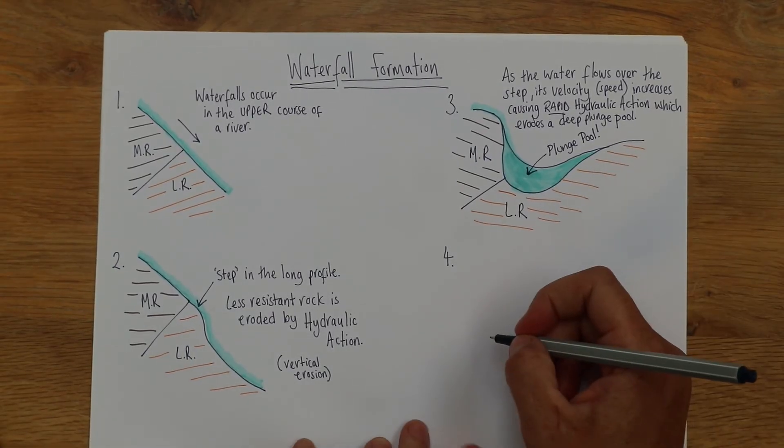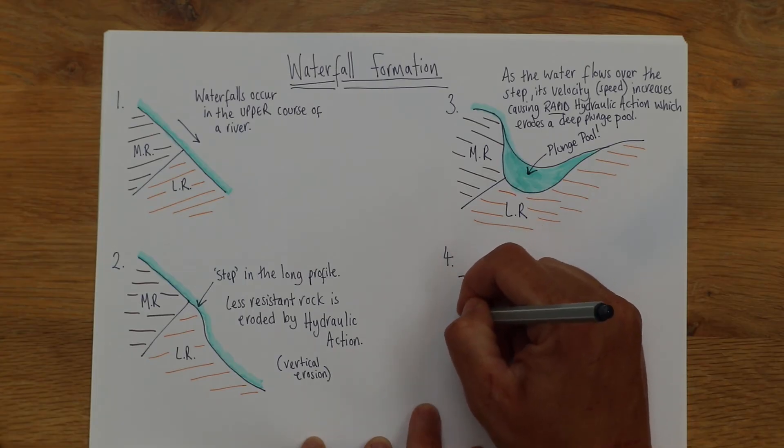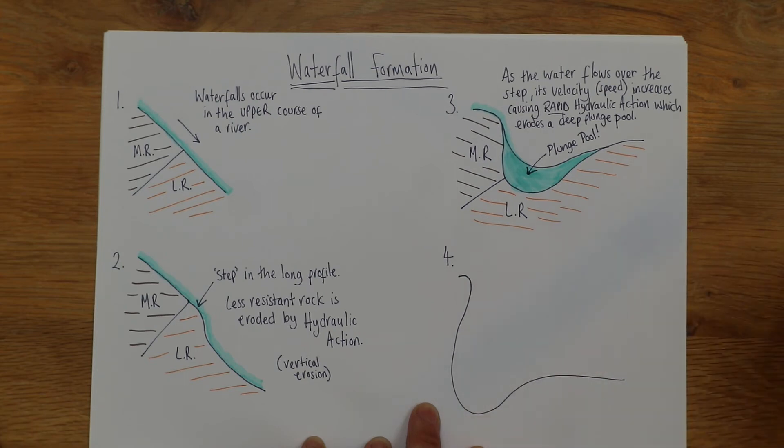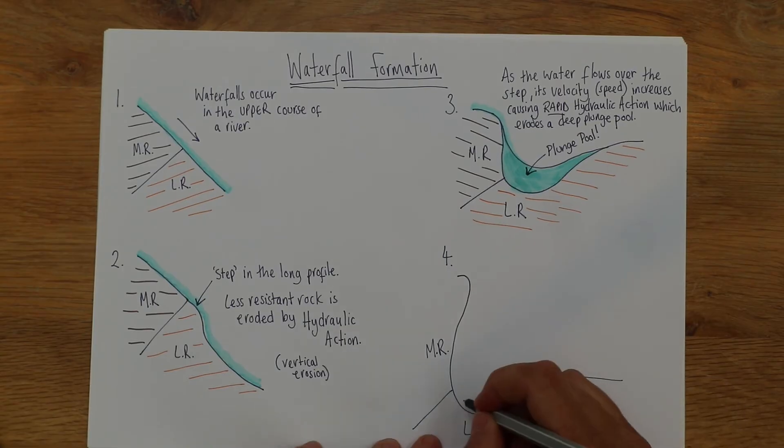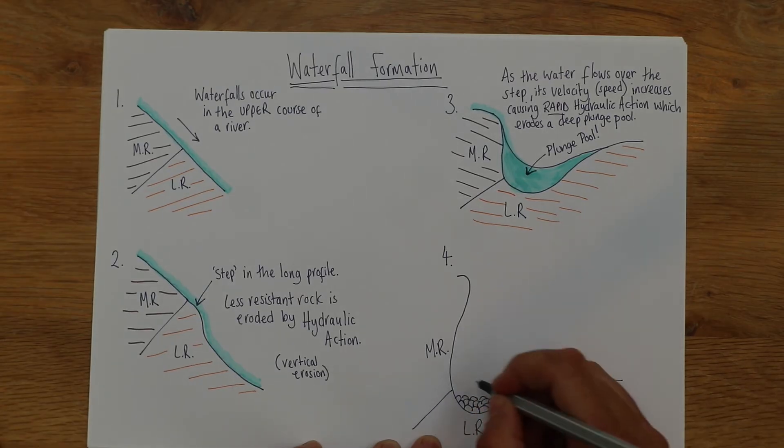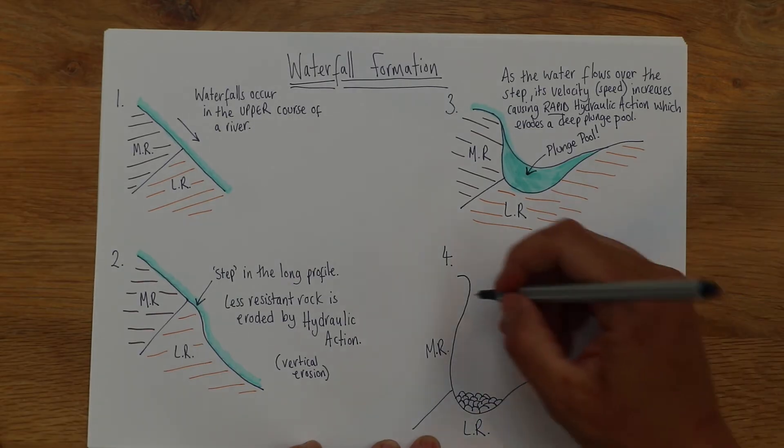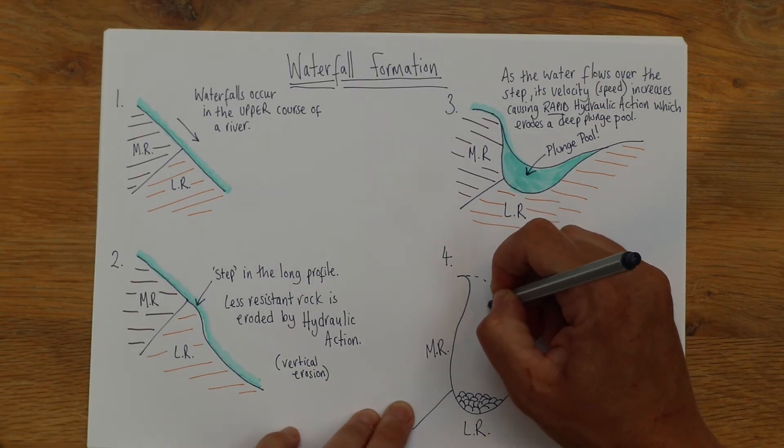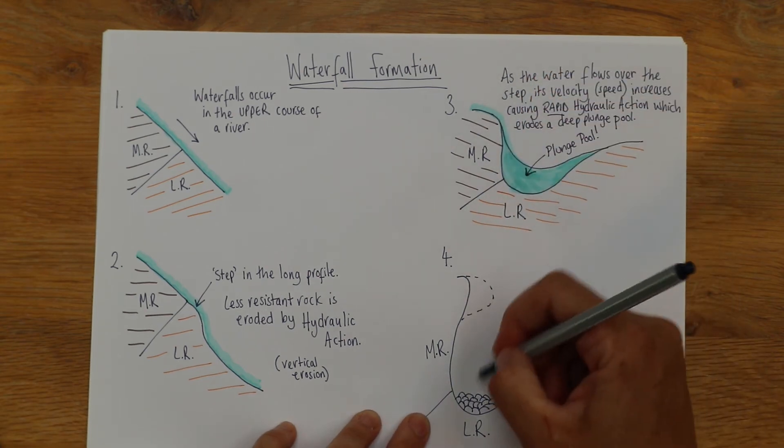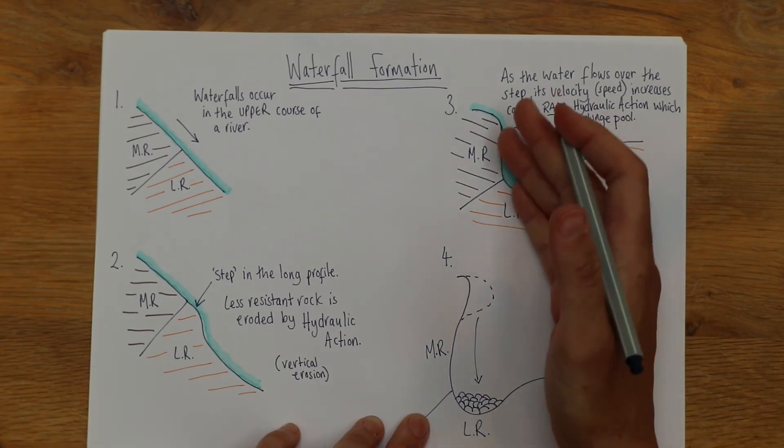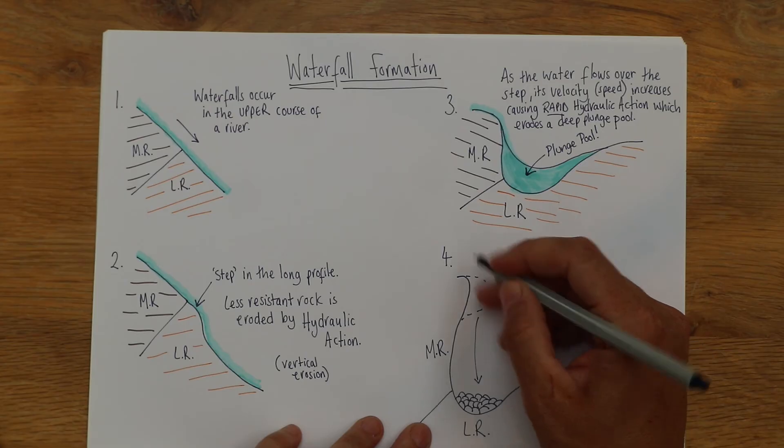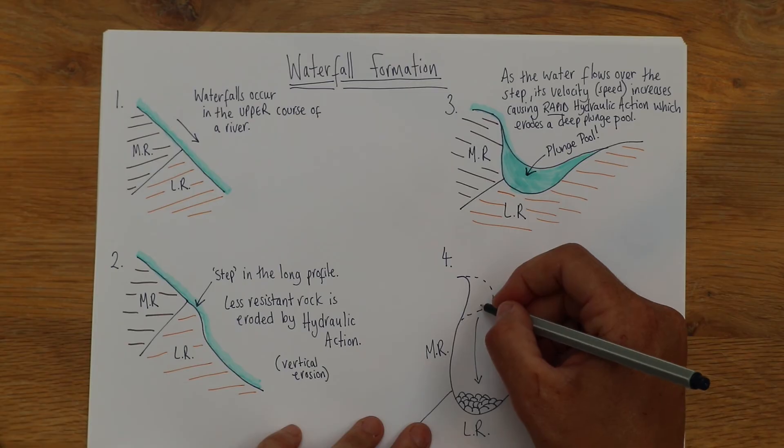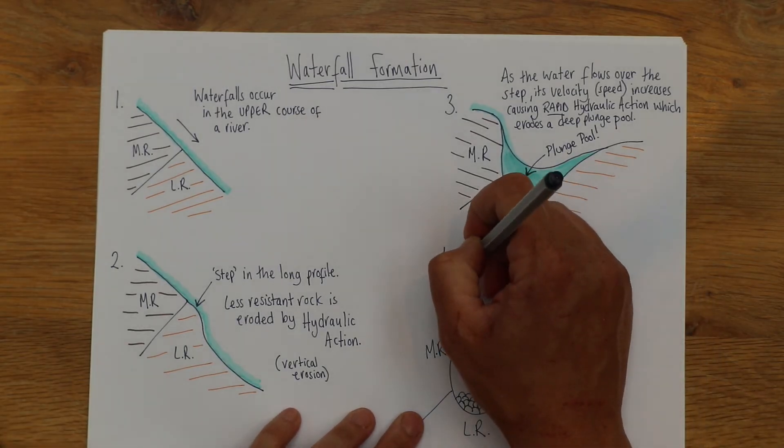You might think we're done there but we're not. There's more. Stage four is the same sort of curve. We've got that line, we've got our more resistant rock on this side, our less resistant rock beneath. I'm actually going to draw in some boulders and things that sit in the bottom of the plunge pool. What's happened is this bit here has fallen in. As the waterfall creates this plunge pool, it erodes. Eventually it digs away at that less resistant rock and the more resistant rock becomes overhanging, becomes heavy, and eventually over time it will break away. When it does that, the waterfall retreats. It actually moves backwards.